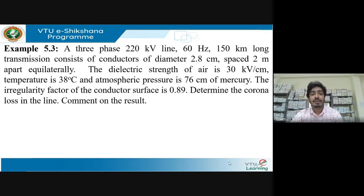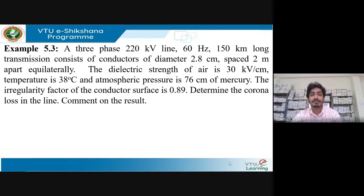Moving to the next problem: you have a lot of data given and must find the corona loss, then comment on the result — specifically how different parameters affect corona power loss and to what extent. The problem is a three-phase 220 kV line with a frequency of 60 Hz and a line length of 150 kilometers, with conductors of diameter 2.8 centimeters spaced at 2 meters.